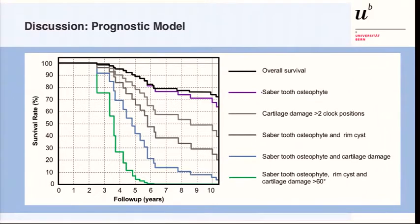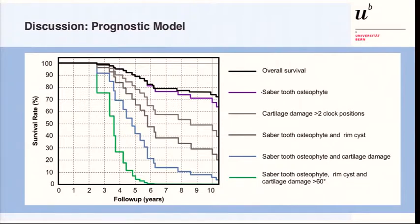You can construct a prognostic model for these hips. Feeding the parameters into a statistical model allows you to predict survivorship based on the factors a patient has. For example, having only the saber-toothed osteophyte results in decreased prognosis over time. With cartilage damage greater than 60 degrees, survivorship drops to about 50% at 10 years. Any combination of multivariate factors produces a significant drop in prognosis already at five years after surgery.